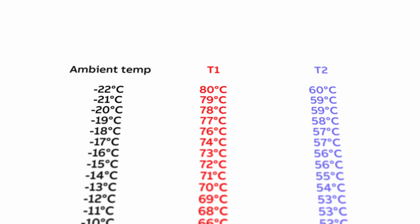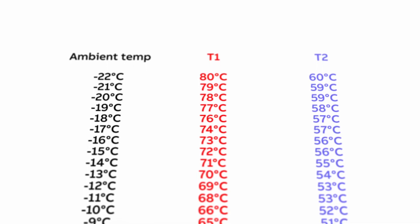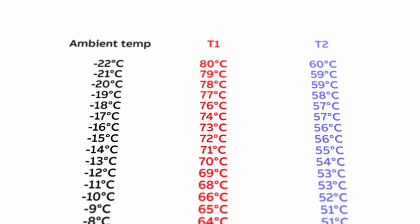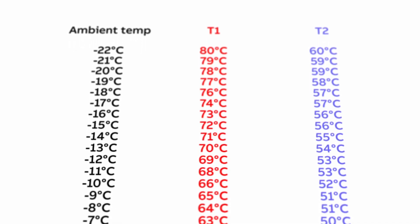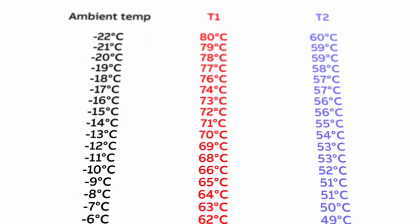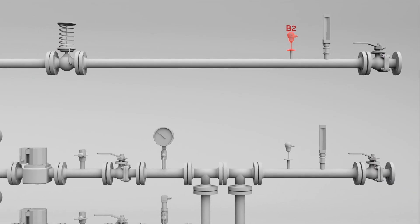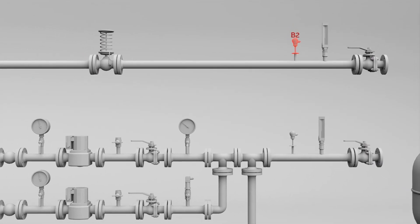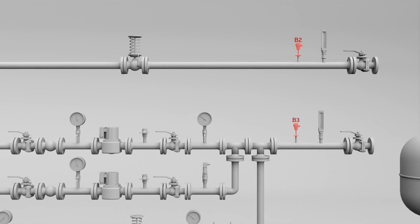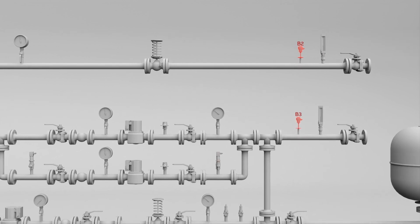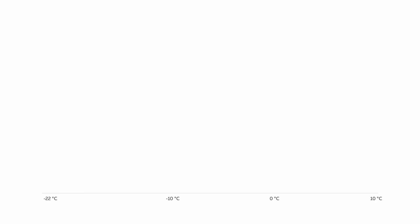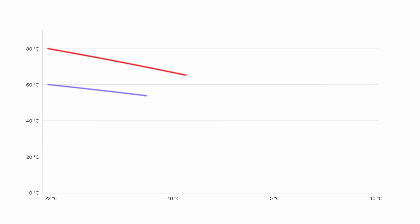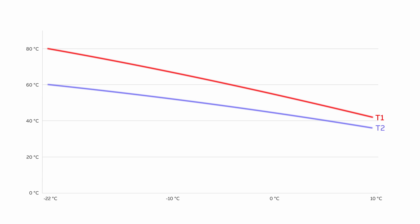In many cases, a temperature graph is used for that purpose. Basically, it is a table where for each ambient temperature value, there are corresponding T1 and T2 values. T1 is the desired temperature of supplied water and T2 is the desired return water temperature. If you put ambient temperature on the x-axis and T1, T2 on the y-axis and connect the points, you'll get the temperature graph.